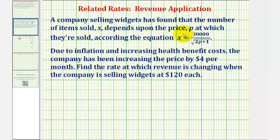Where again, x is the quantity and p is the price. Due to inflation and increasing health benefit costs, the company has been increasing the price by $4 per month. Find the rate at which the revenue is changing when the company is selling widgets at $120 each.